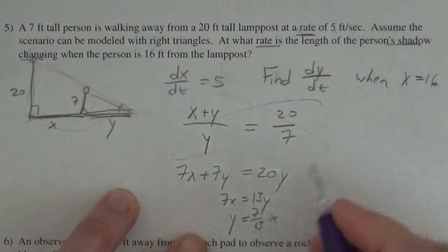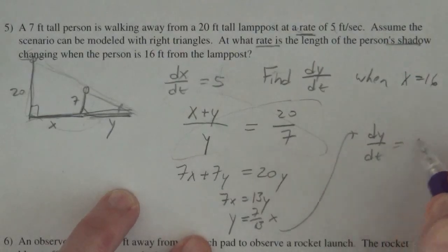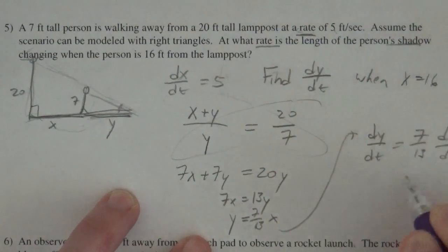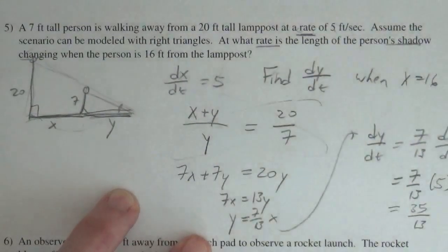And then if I want dy/dt, taking the derivative of both sides, dy/dt is just 7 thirteenths times dx/dt. So 7 thirteenths times 5, so I'm getting 35 thirteenths.